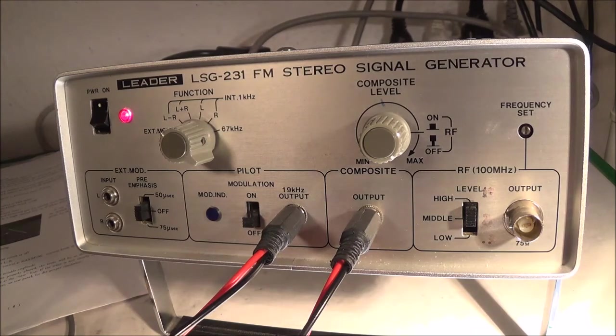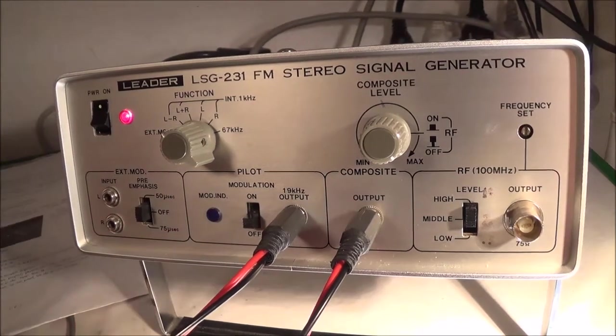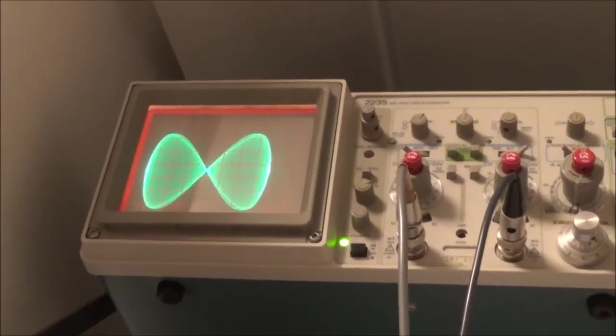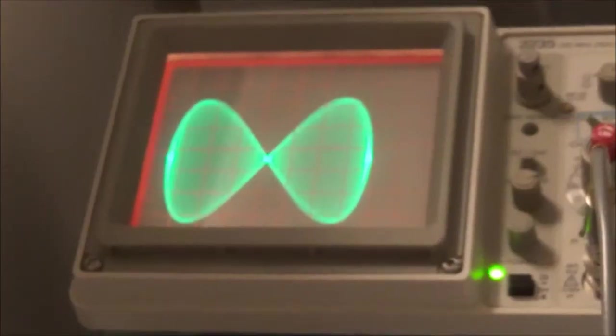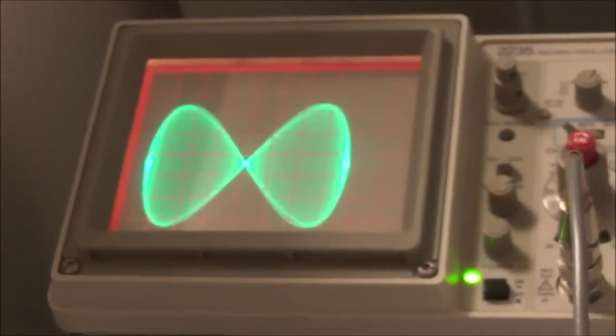Now we can take a look at my signal. I want to get something like this. Let me twiddle around a little bit. Okay, this is how it is not supposed to look. Let me put it back in the original position. Now I am back to the original position and that is how it is supposed to look.